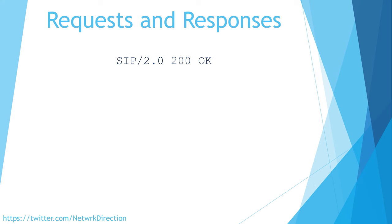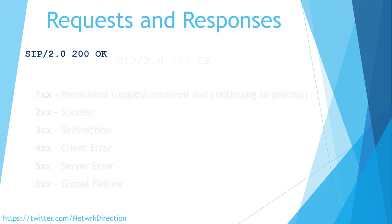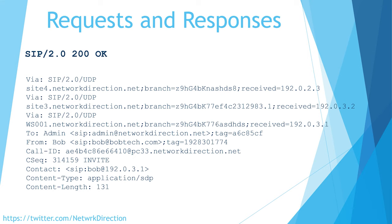Responses are very similar to requests. The response starts with a single line that clearly shows us the SIP version and includes a response code and description — in this case 200 OK. There are six categories of response codes. Anything in the 200 range simply means that all is well. The 100 range is also good but there's more information yet to come. For example the 180 response code means the phone is ringing but it hasn't been picked up yet. Just like HTTP, the 400 and 500 ranges refer to some sort of error — 404 for example means that a resource is not found. The rest of the response includes headers just like requests do, which are very useful when troubleshooting a phone call.